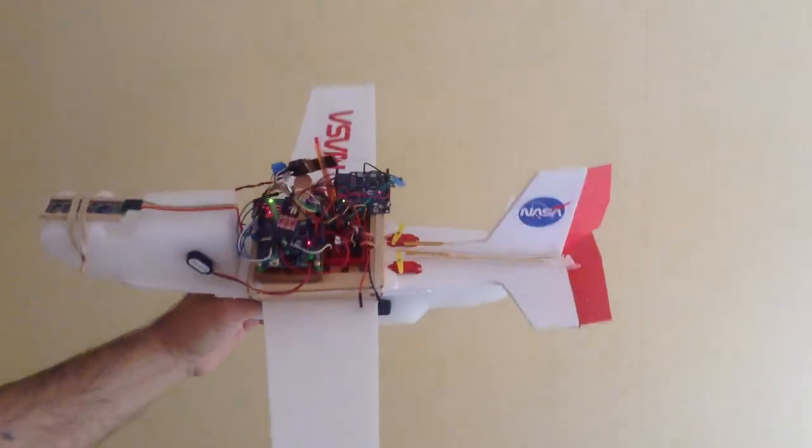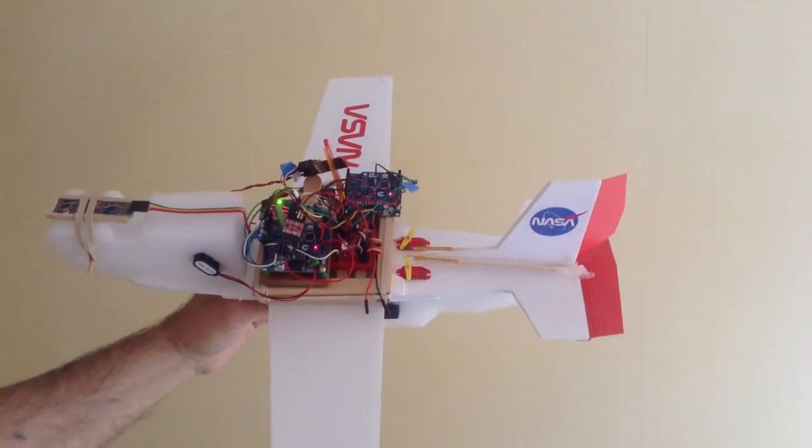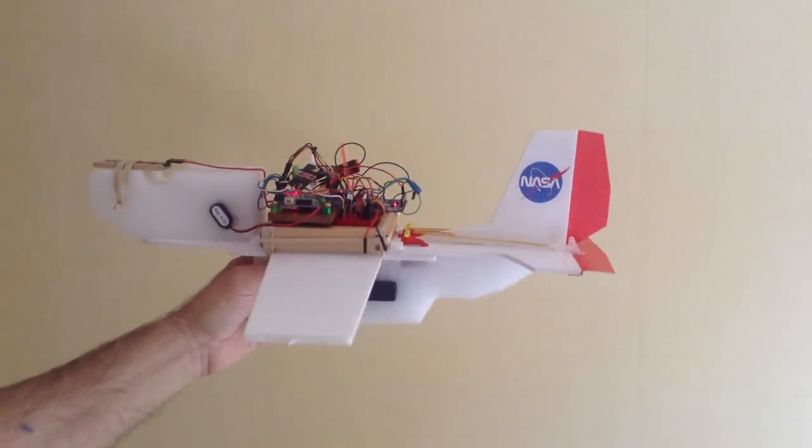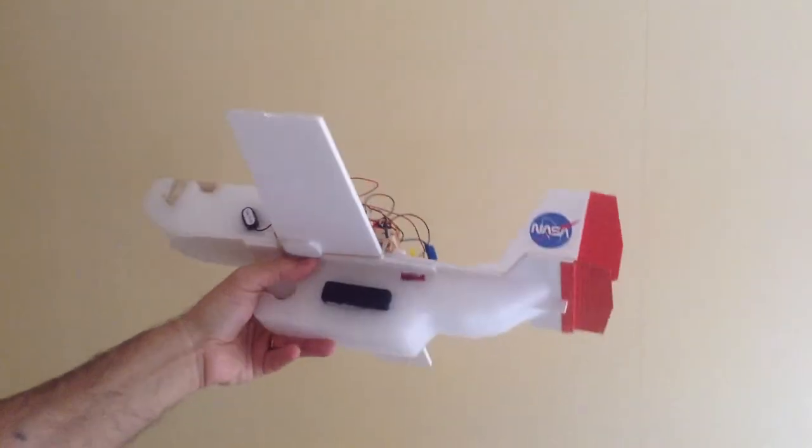And if we bank over like this, you can see the rudder tries to correct it, to roll over to the other side, and like this.